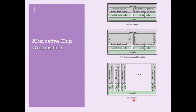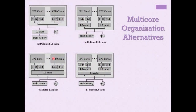The multi-core organization can take different forms depending on the interpretation. The first form uses a dedicated L1 cache: each CPU core has its own L1 data cache and L1 instruction cache, while the L2 cache is shared among all the different cores. Cores 1 through n all get their data from this shared L2 cache.